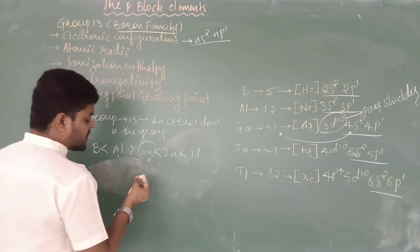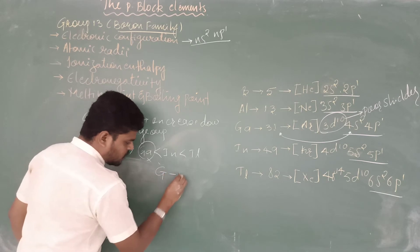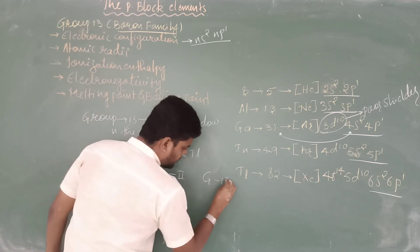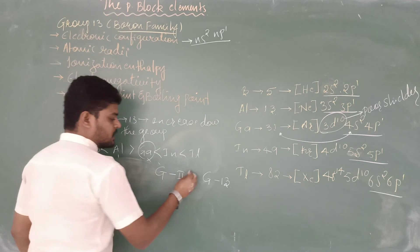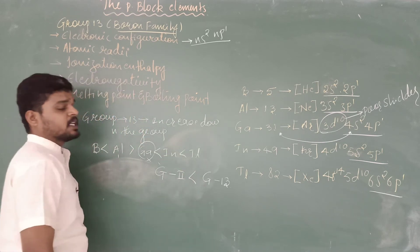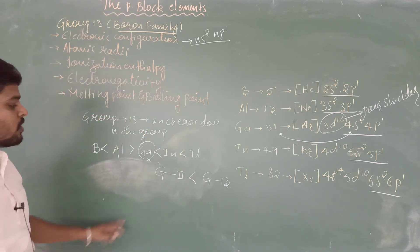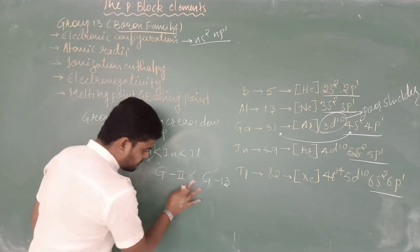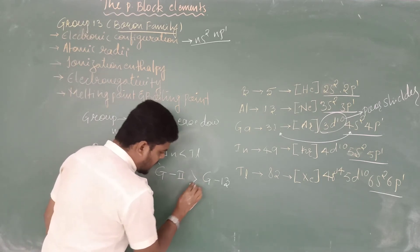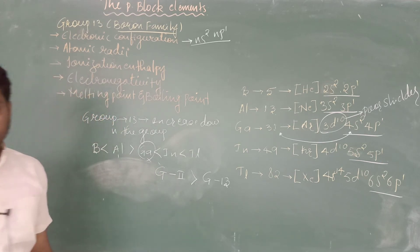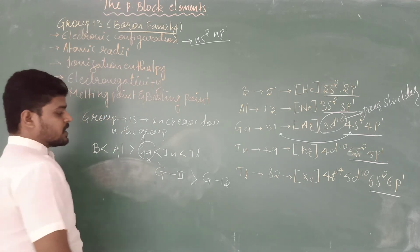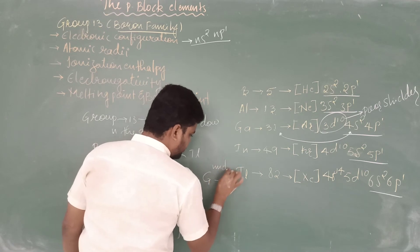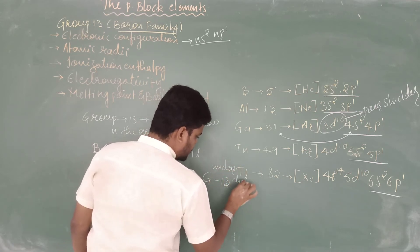When comparing the atomic size of group 2 elements with group 13 elements, the group 13 elements have a smaller atomic radius than group 2 elements of the same period. This is because group 13 elements have a greater nuclear charge than group 2 elements in the same period.